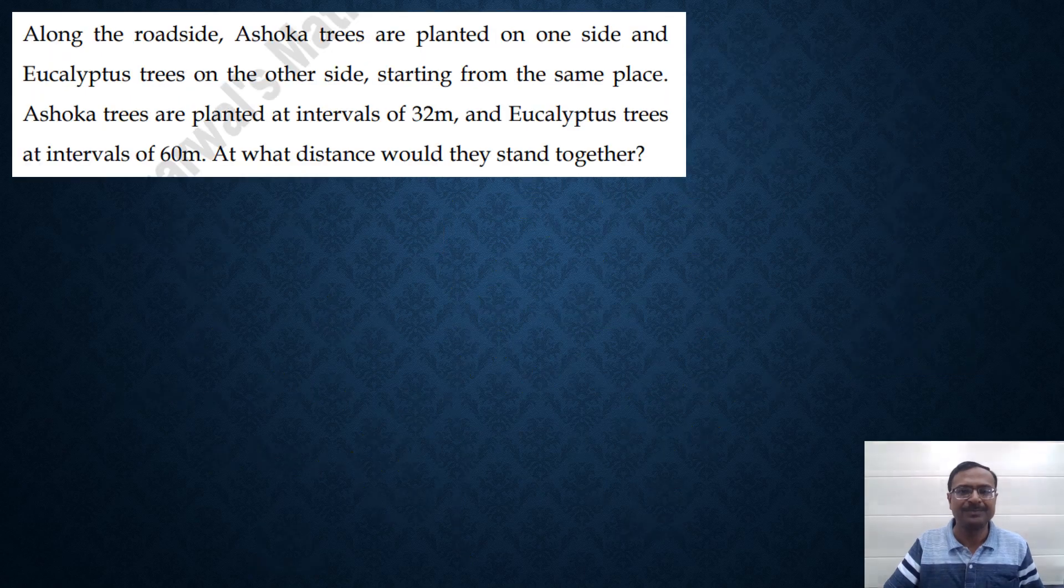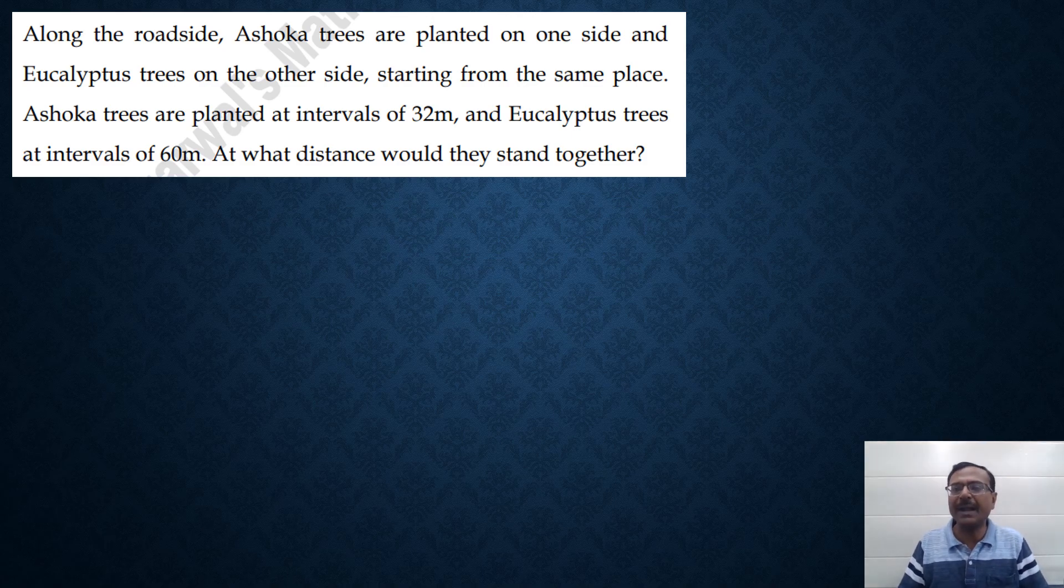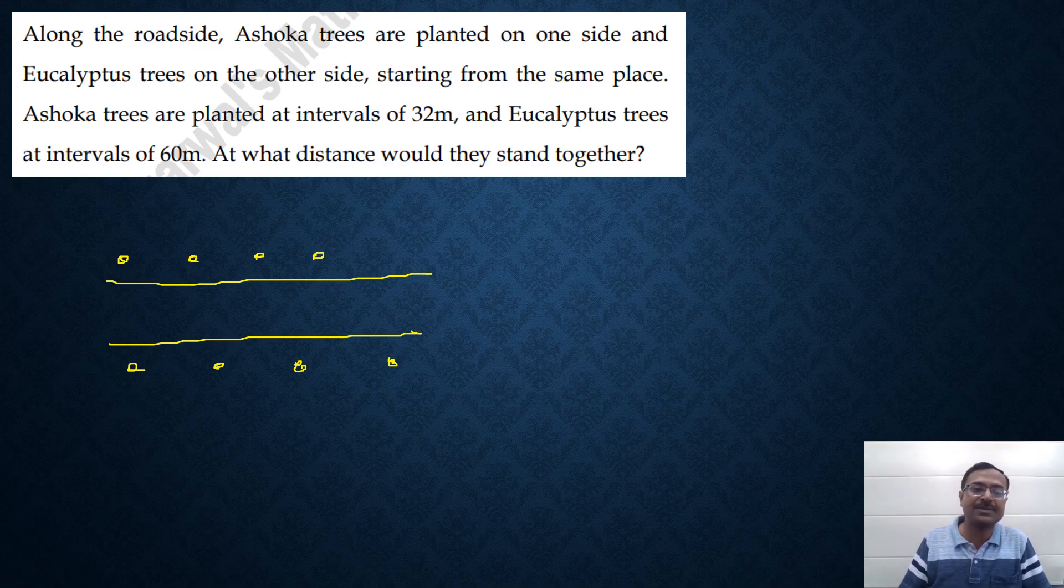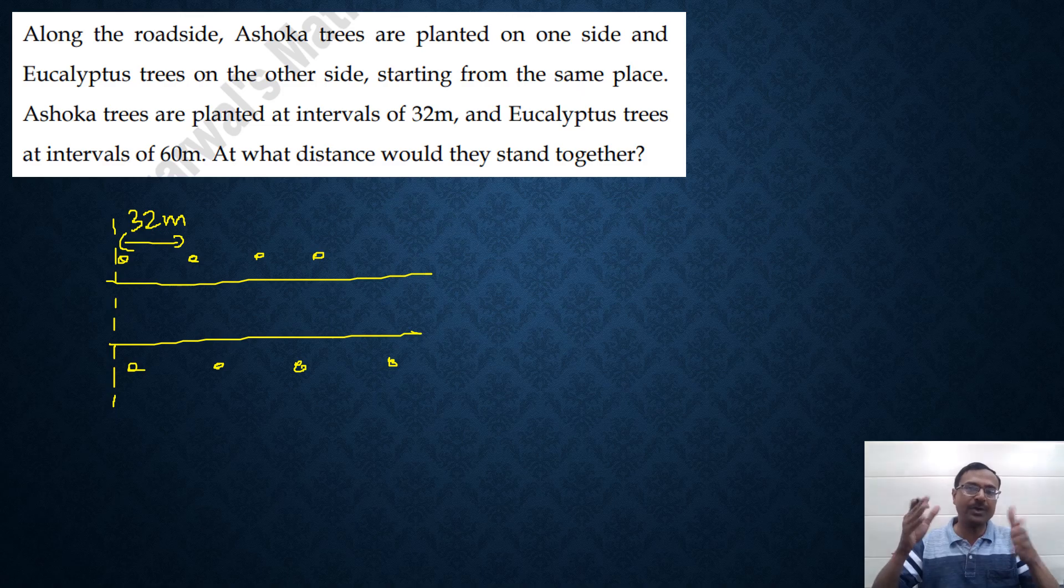Let's see one more question. This is a statement problem based on LCM. Along the roadside, Ashoka trees are planted on one side and Eucalyptus trees are planted on the other side. There is a roadway like this. On one side we are planting the Ashoka trees and on the other side we are planting the Eucalyptus trees. Starting from the same place, the plantation is starting from the same place. Ashoka trees are planted at intervals of 32 meters, so the distance between consecutive Ashoka trees is 32 meters. And the Eucalyptus trees, the consecutive Eucalyptus trees have a difference of 60 meters between them. At what distance would they stand together?